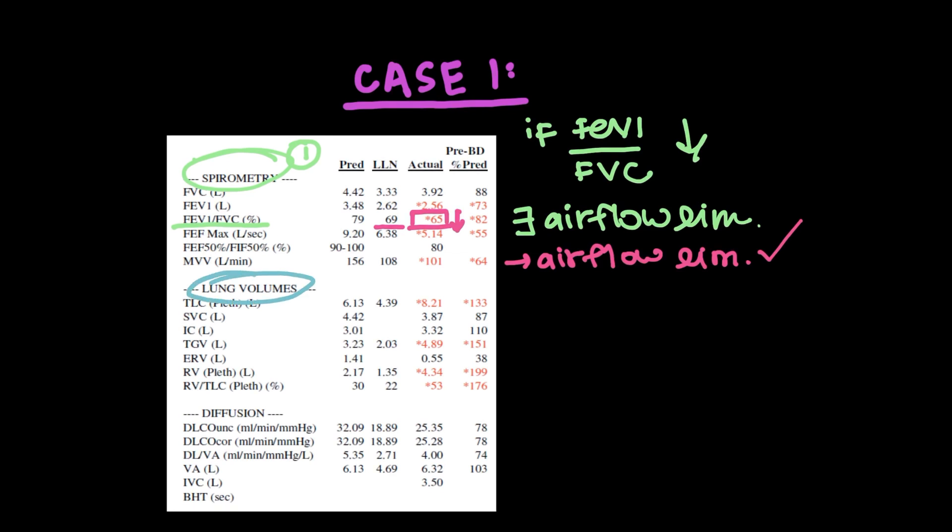All right. So next, I look at the lung volume. So that's the number two thing I look at. You want to pay attention to the TLC, the total lung capacity, the RV, the residual volume, and the ERV, the expiratory reserve volume. Remember, if TLC is increased, then that can go along with your airflow limitation in the form of air trapping and hyperinflation. If TLC is decreased, then you have a restrictive component of lung disease.